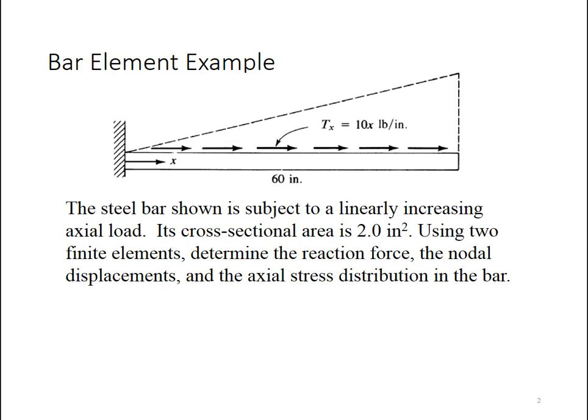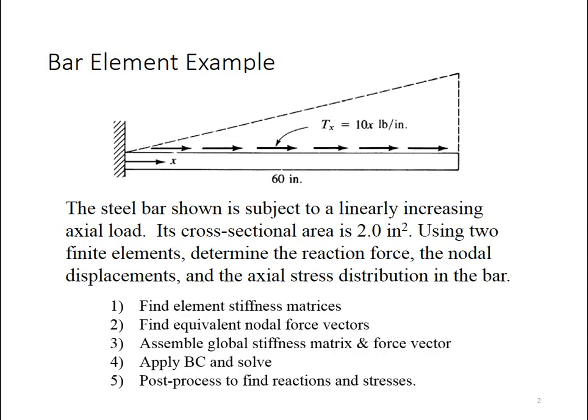It is linearly increasing as shown, and I have a cross-sectional area. I want to break this into two finite elements and find reaction forces, nodal displacements, and axial stress distribution. The process I'm going to follow is: first find the element stiffness matrices, then find equivalent nodal force vectors, assemble those stiffness matrices and force vectors into a global stiffness matrix and force vector, apply the boundary conditions, solve it, and do post-processing. So walk through the whole process with a very simple model here.